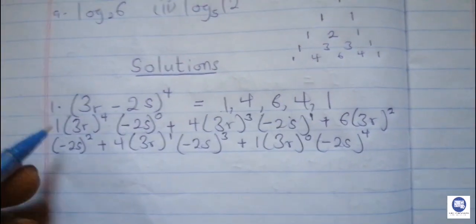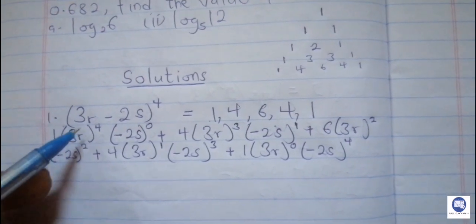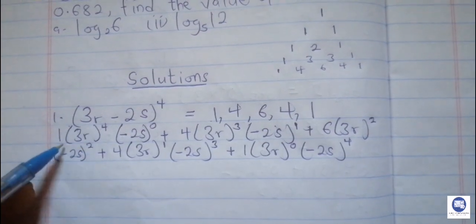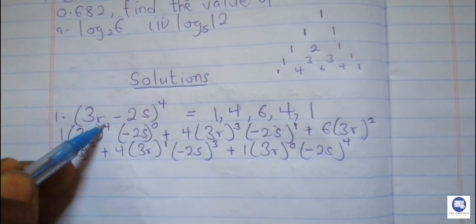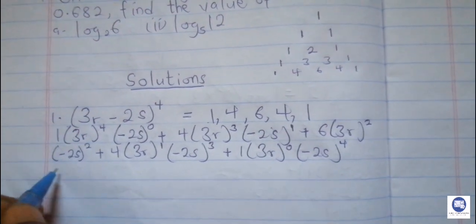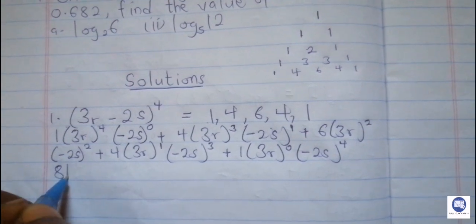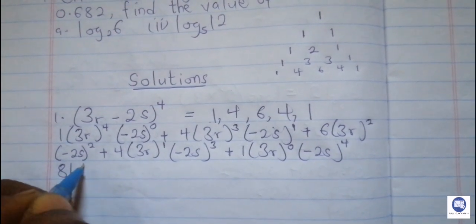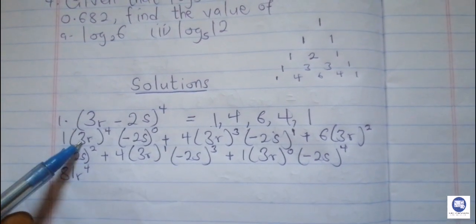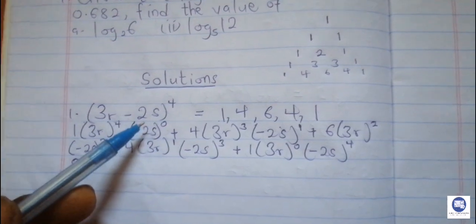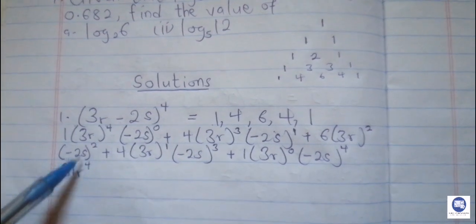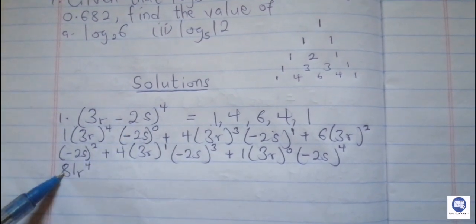Then we simplify. The power of 4 affects everything in the bracket. So we have 3 raised to the power of 4, which is 81, times r raised to the power of 4. In indices, when a base is raised to a power of 0, it equals 1. So the last part of the first term multiplies by 1.